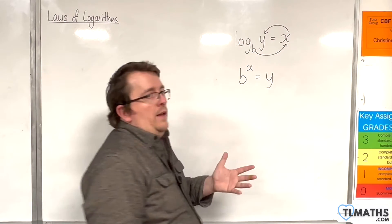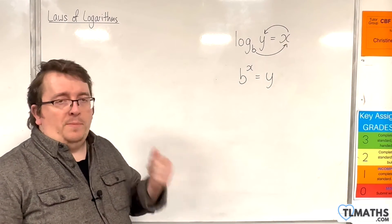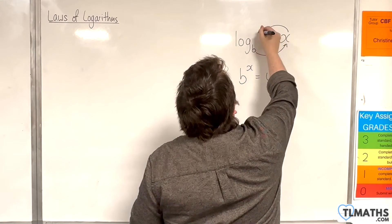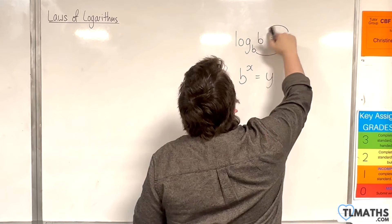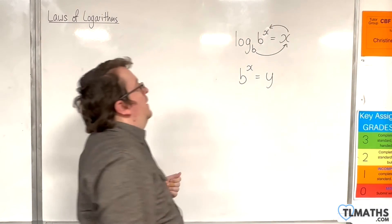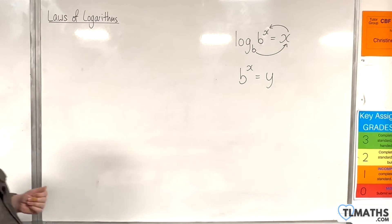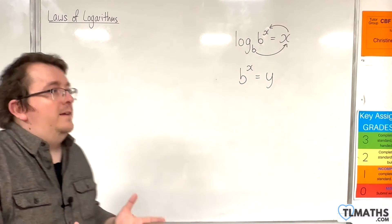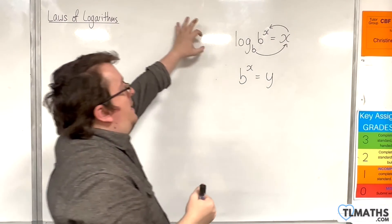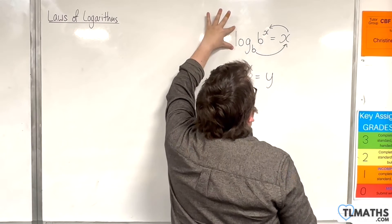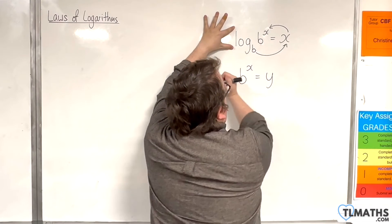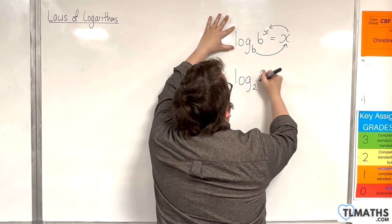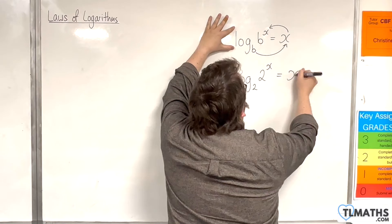Now, what if the y value was b to the x itself? If I replace y with b to the x, what we're saying is b to the x is b to the x — unsurprisingly. So this is our first identity. If you have log base 2 of 2 to the x, then this is going to be x.